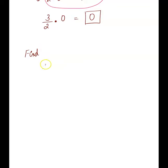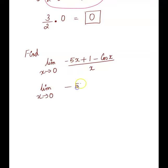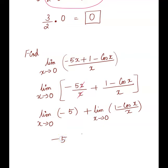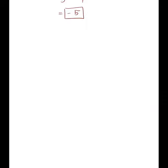Find the limit of (-5x + 1 - cos x) / x as x approaches 0. We see the (1 - cos x)/x situation plus a -5x/x term. Separating the fraction: -5x/x + (1 - cos x)/x, where the x's cancel in the first term giving -5. Applying the limit to each term separately: limit of -5 is -5, and limit of (1 - cos x)/x as x→0 is 0. So the answer is -5 + 0 = -5.